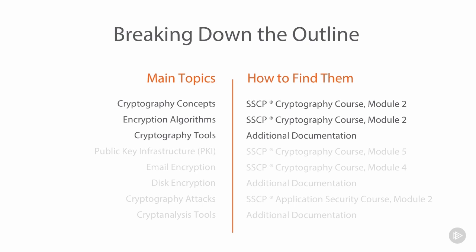As you're working with cryptography in real life, one of the most important things is your public key infrastructure, or PKI. This could be publicly cited — something you might work with from Symantec, used to be VeriSign — where you're getting certificates to use externally, or you may internally have your own PKI infrastructure, as most companies do. It helps to understand how this works. After you've learned the cryptography concepts and encryption algorithms, it'll make a lot more sense. This is in SSCP's cryptography course, Module 5.